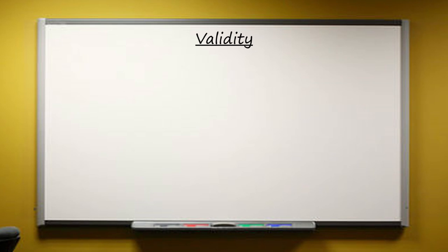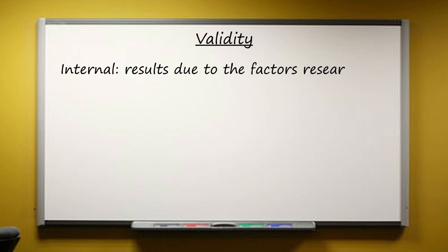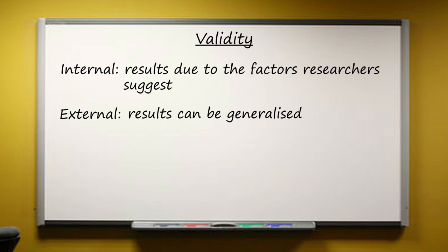Make sure you know the distinction between internal and external validity. Internal validity refers to whether the results are really due to the factors the researchers suggest, or due to something else — maybe confounding variables. External validity is about whether the results can be generalised to different environments, participants or times.